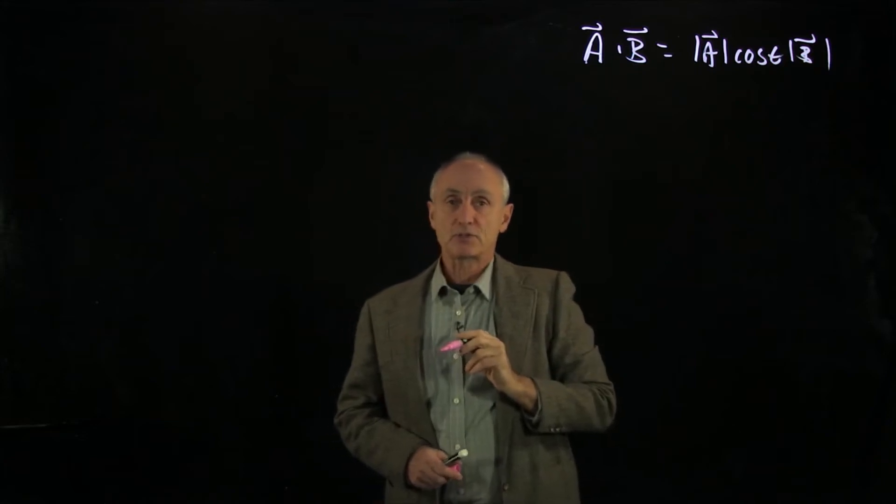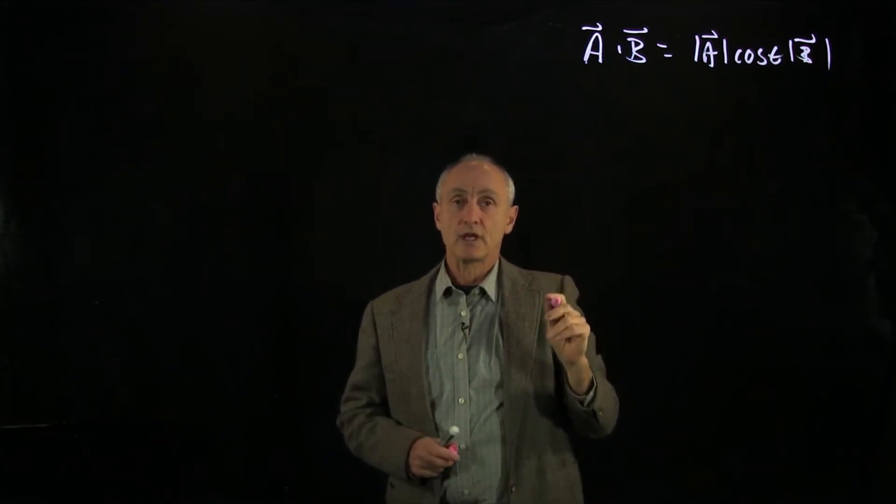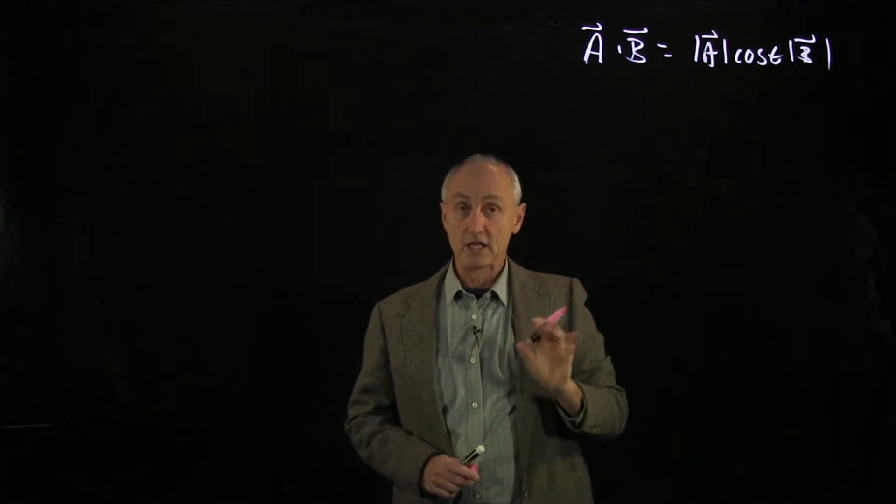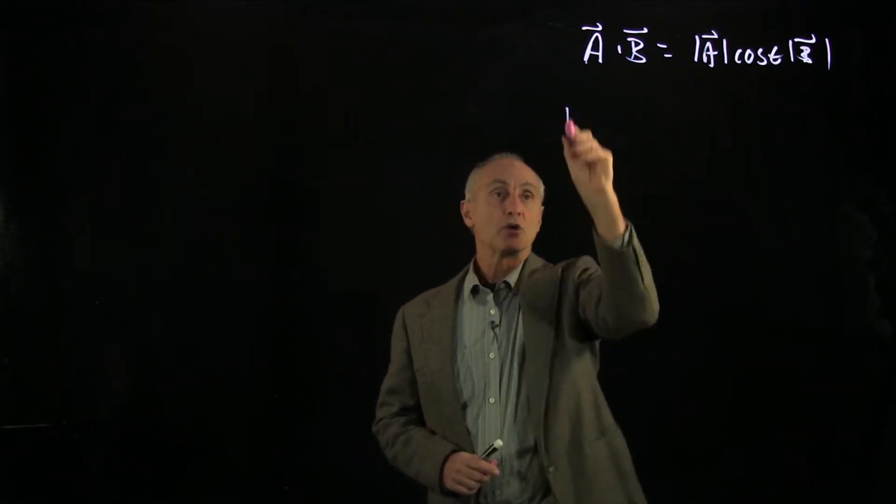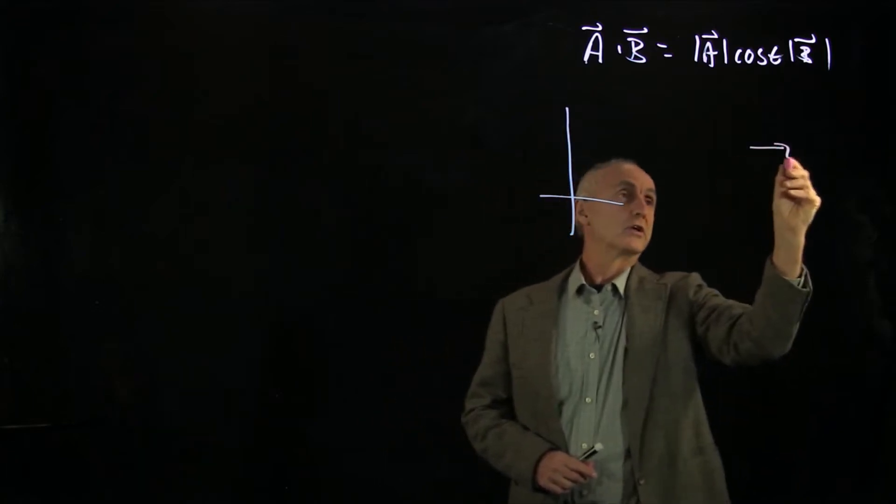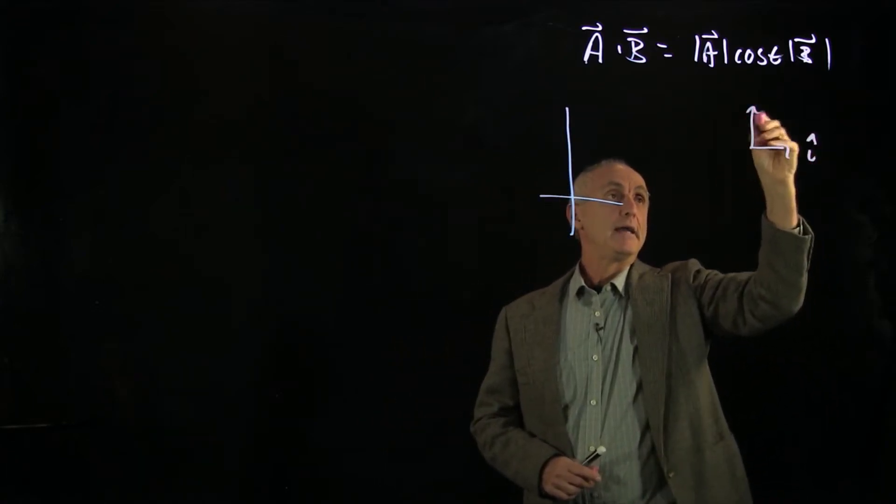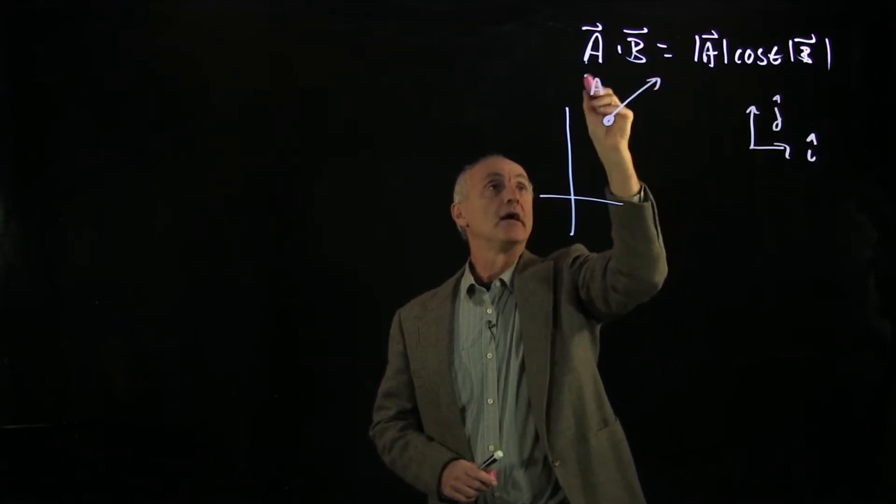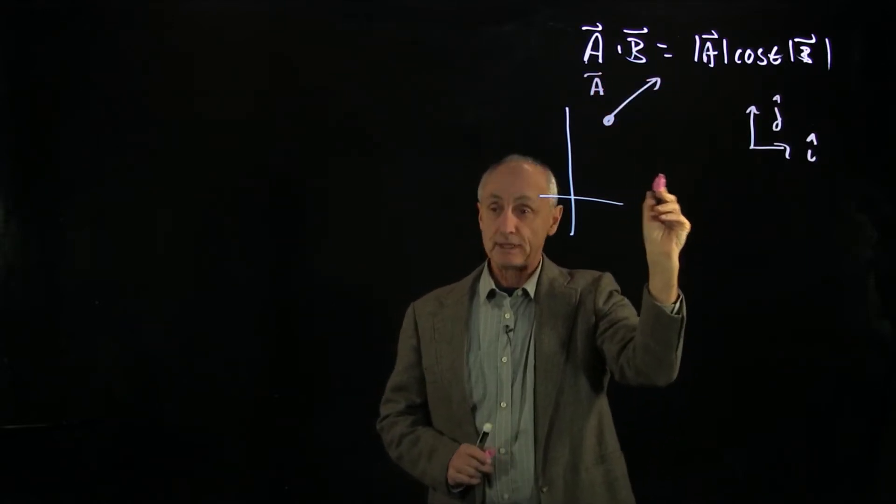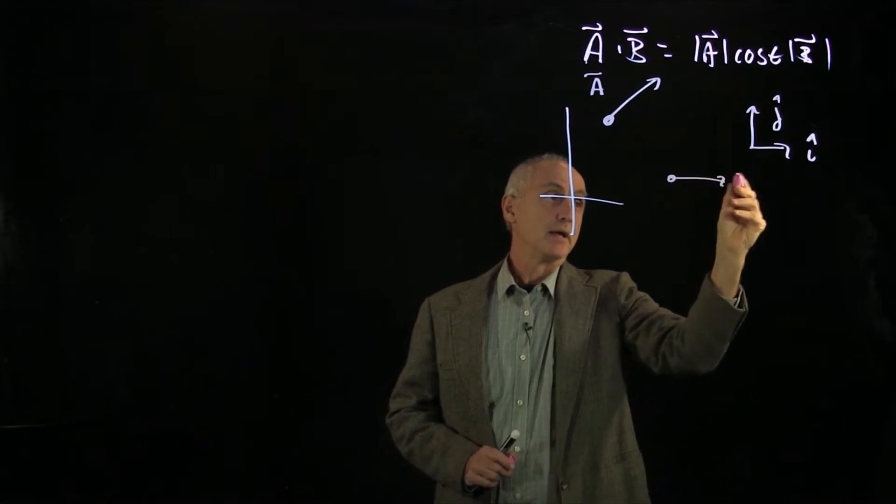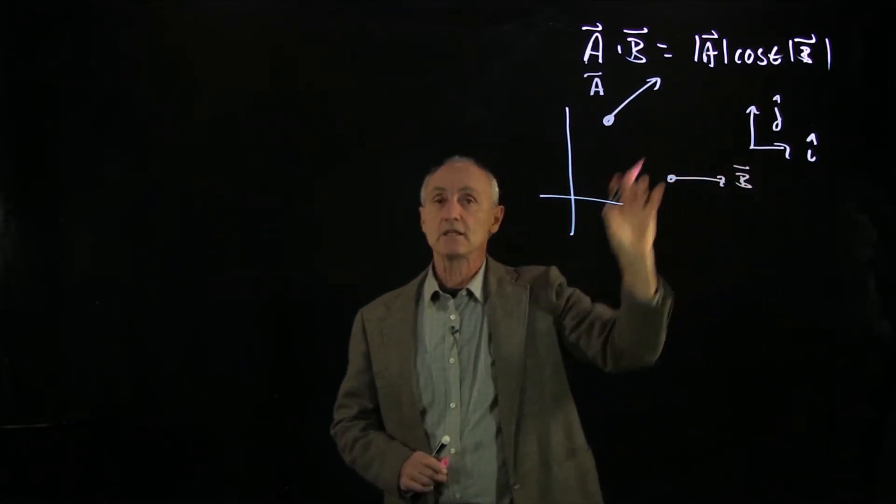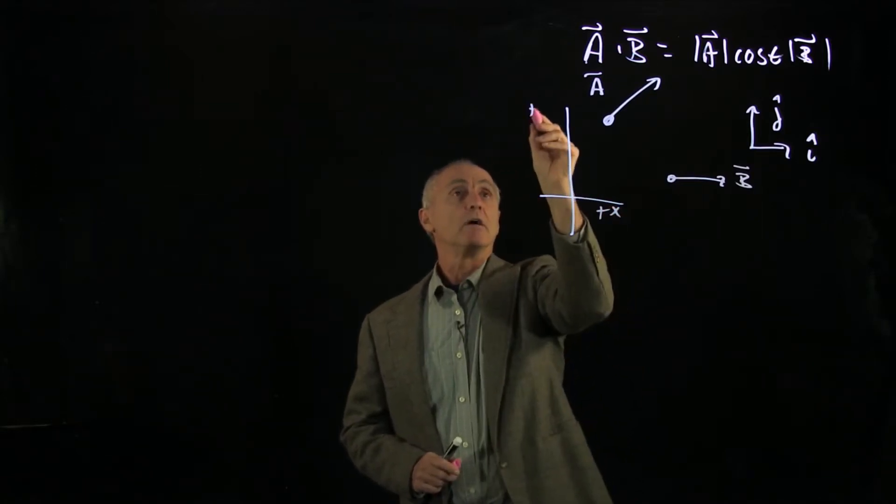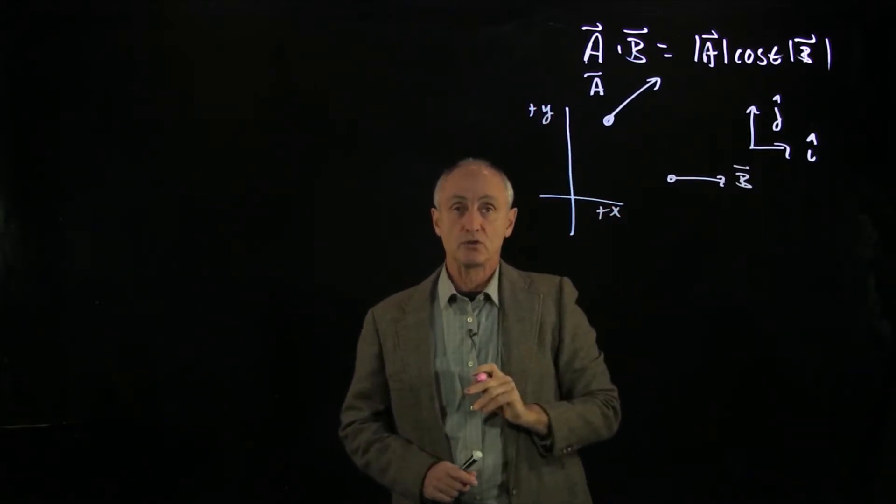But many times in physics problems, we actually have vectors in space, and we want to see how to do this in terms of a Cartesian or any coordinate system in particular. So let's set up a coordinate system, Cartesian, i and j. And now this is very important. Let's define a vector A here, and let's have another vector in a completely different point B. This is our plus x plus y, and I'm only doing things in two dimensions.